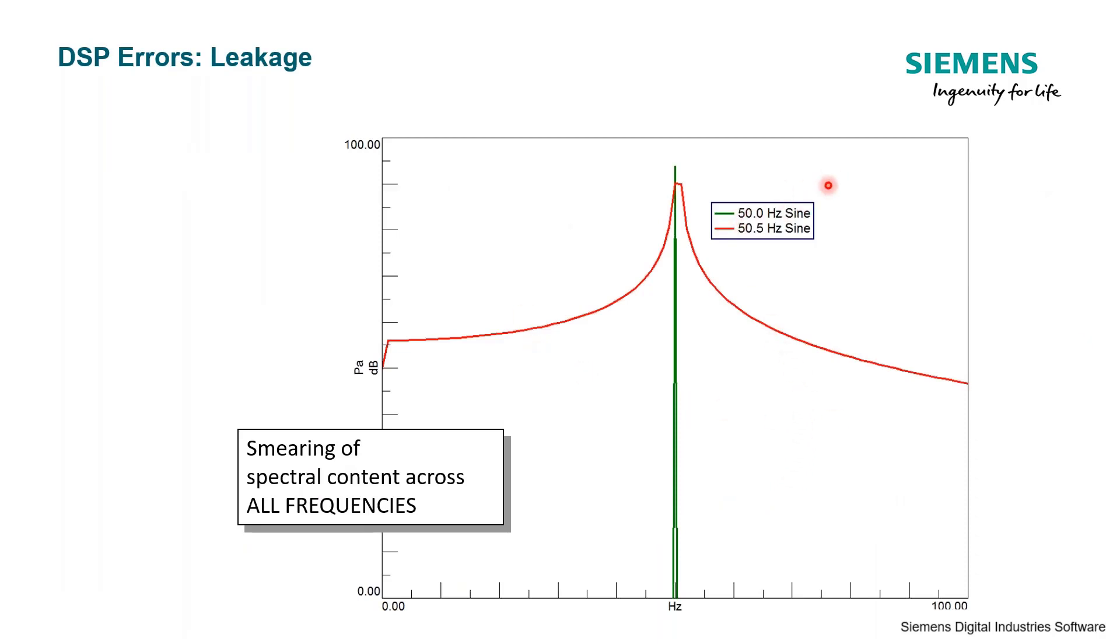In this plot, we still have a delta F of 1 hertz, but we have frequency content at 50 hertz and 50.5 hertz. Now what do we see? Well, with the 50.5, because we don't have a spectral line there, actually, it's smearing that spectral content, not across just the next two adjacent frequencies, but across this whole bandwidth, across our entire bandwidth. Whereas with the 50 hertz, because we have a spectral line there, no problem, lines up.